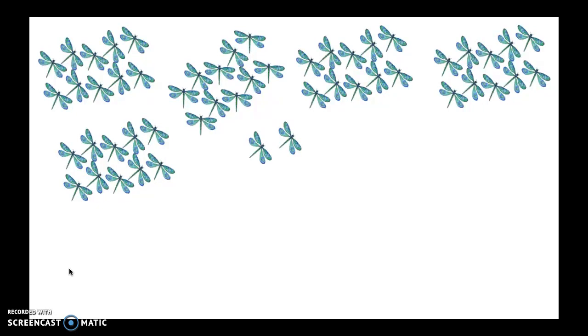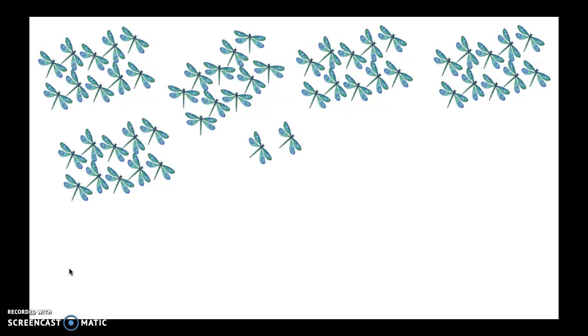I'm going to go ahead and press pause and I want you to fill in this place value mat and then write down three different ways you can describe this number. Press play when you're ready to check yourself. Okay, did you fill in your place value mat and write down three different ways you can describe this number? Okay, good. Let's see how you did.